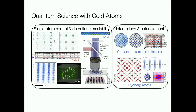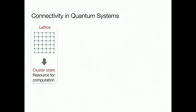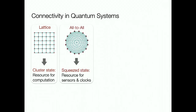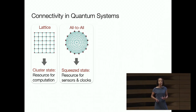One limitation about this toolbox has to do with the connectivity of the interactions in these systems. Typically, interactions decay with distance—atoms interact most strongly with their neighbors. That governs the physics we can access. For example, nearest neighbor interactions in a lattice naturally give rise to a cluster state, a resource for computation. If every atom talks to every other one, that naturally generates a squeeze state, a resource for enhancing precision measurements.